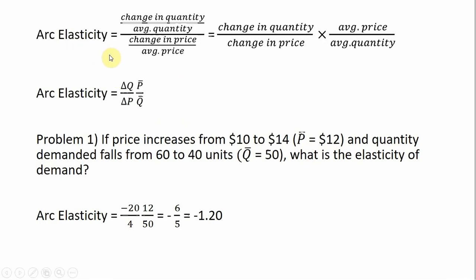The arc elasticity of demand can be written as the following: the change in quantity demanded divided by the average quantity, and then this is all divided by the change in price divided by the average price. To simplify this, I'm going to multiply the numerator and denominator by the reciprocal of the denominator — that is, average price divided by change in price — and the formula simplifies down to something like this.